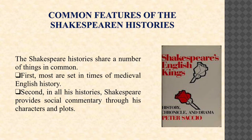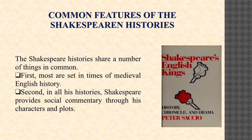The Shakespeare histories share a number of things in common. First, most are set in times of medieval English history, dramatizing the Hundred Years' War with France and giving us Richard II, Richard III, and King John. Second, in all his histories, Shakespeare provides social commentary through his characters and plots. The history plays often say more about Shakespeare's own time than the medieval society in which they are set. It wasn't Shakespeare but Shakespearean scholars who categorized his plays into the areas of tragedy, comedy, and history.